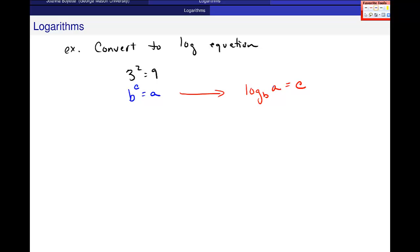So here, this is log base 3, a is 9, and c is 2. I'm just switching forms. A lot of times you just switch forms to see which one is more useful to use.